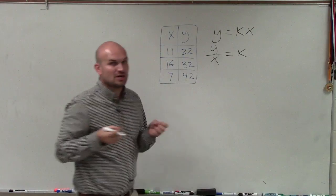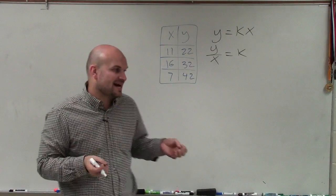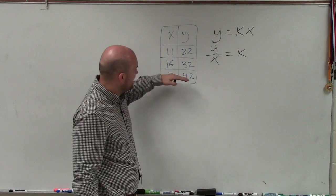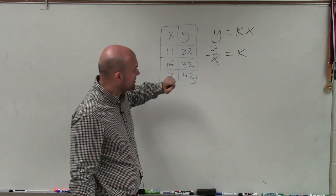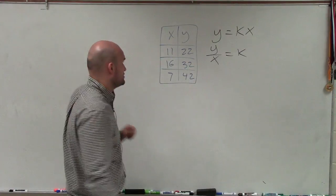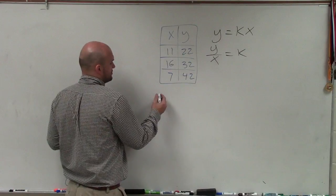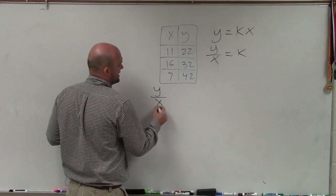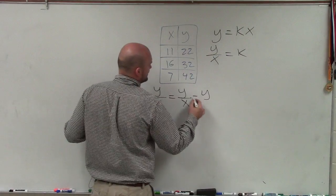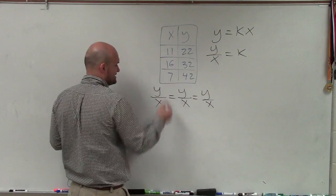where k is going to represent our constant. As long as that constant is equal between each of any two of our y and x values, then we have direct variation. So basically, all we want to make sure is that y over x is equal for every x and y coordinate in my table.